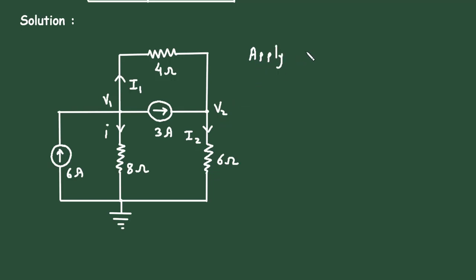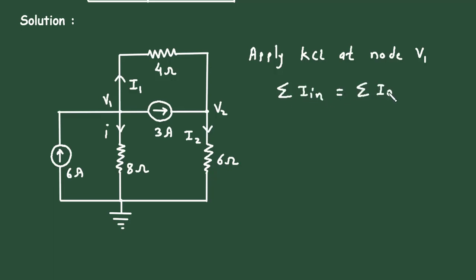Now apply KCL at node V1. According to KCL, that is Kirchhoff's current law, summation of all the currents entering a node is equal to summation of all the currents leaving the node. Here the entering current is 6 ampere. So 6 ampere equals the leaving currents: I1, I, and 3 ampere.